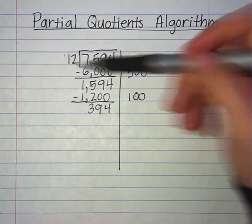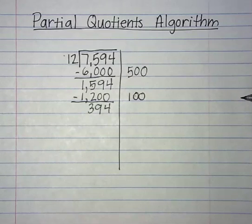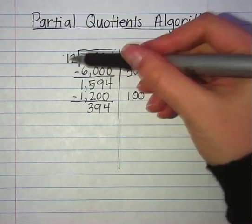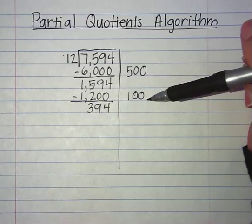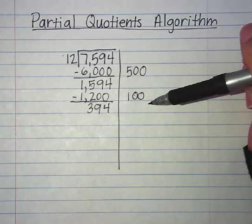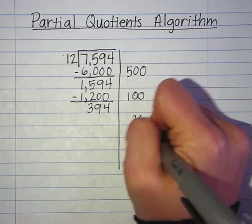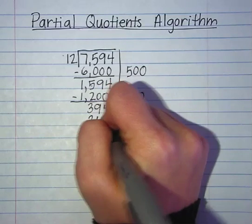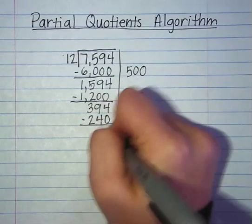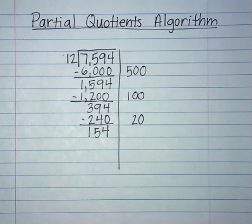How many times does 12 go into 394? I would think maybe 10 — 10 times 12 is 120. What if I doubled it to 20? 20 times 12 would then be 240. I like that number better. So 20 times 12 is 240. Subtract: I get 4, then 5, then 1. Now I just need to think: how many times does 12 go into 154?